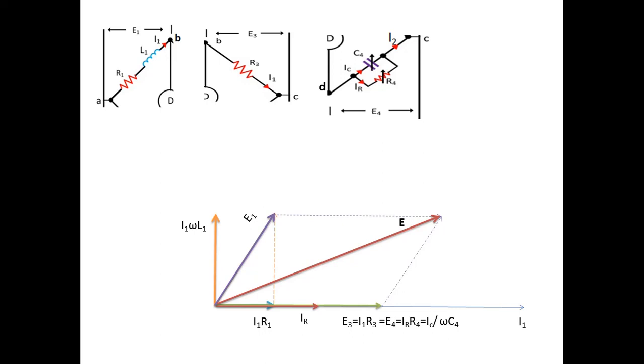But the current in the capacitor will lead the voltage in the capacitor by 90 degrees. The voltage in the capacitor is E4, so the current IC will be along the y-axis, leading the x-axis by 90 degrees.